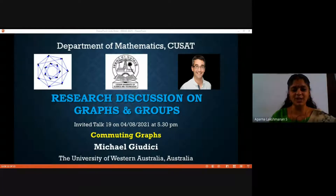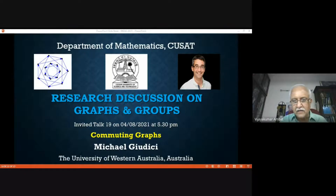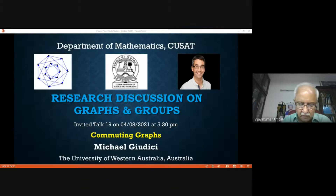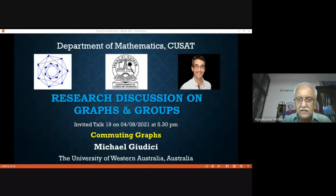Good afternoon and welcome to the 19th session of Research Discussion on Graphs and Groups. I request Professor Ambat Vijayakumar to introduce today's speaker. I'm extremely excited to introduce Michael Giudici, who did his PhD from Queen Mary University of London under the supervision of Peter Cameron. He is presently at the University of Western Australia since 2002 and has been full professor since 2018.